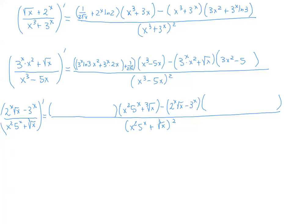The numerator is the difference of two things: 2^x · √x minus 3^x. Let me start with the derivative of 3^x, which is 3^x · ln3. Now I need the derivative of the product 2^x · √x, which is 2^x · ln2 · √x + 2^x · 1/(2√x). That gives us the derivative of the numerator.